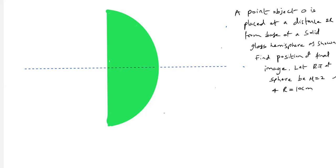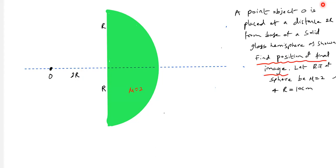The point object is kept at a distance 2r. Let r be the radius and let mu be the refractive index of the glass sphere. We have to calculate the position of the final image. The incident ray will start and traverse towards the boundary.